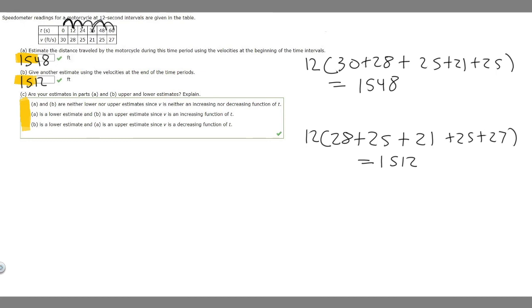If we look at V, we can see that it decreases in the beginning. It goes from 30 to 28 to 25 to 21, but then it increases again. So it goes down and then it goes back up. That means it's not an increasing function. It's not a decreasing function. So neither of these can be right.